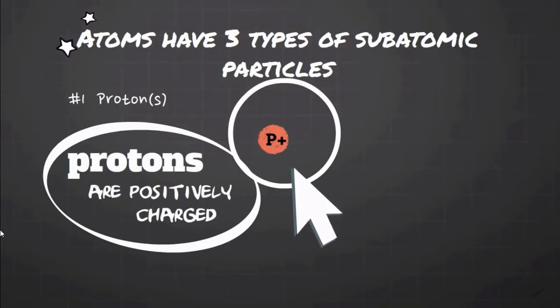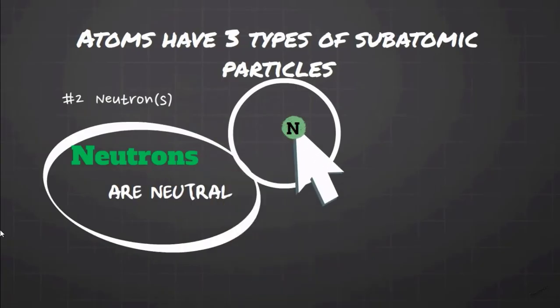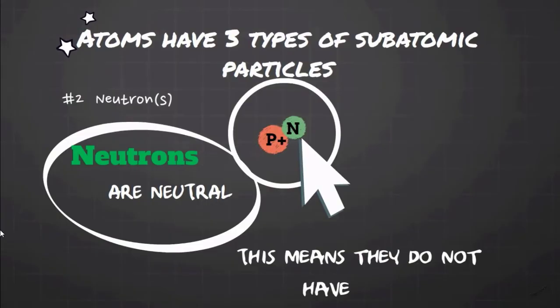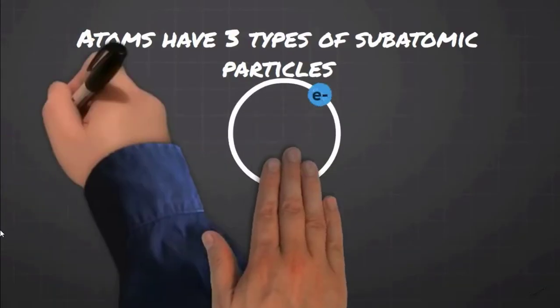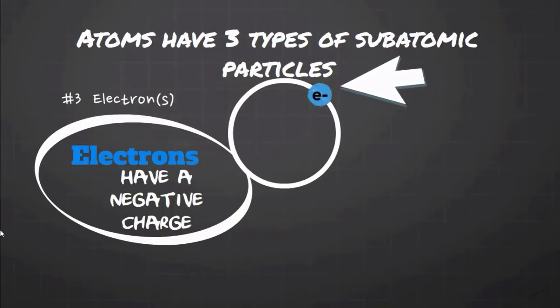Protons are positively charged. Neutrons are neutral, which means they do not have any charge. Electrons have a negative charge.